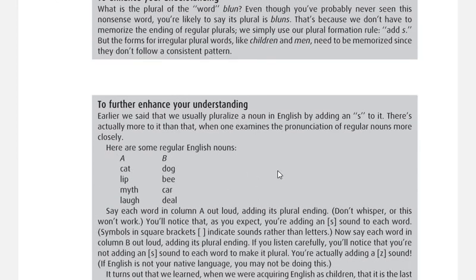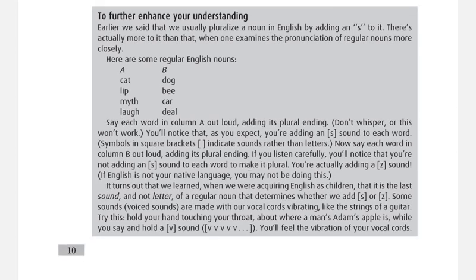Please repeat after me: 'cat/cats', 'dog/dogs', 'lip/lips', 'bee/bees'. You can hear that you are uttering the 's' sound with words like 'cat' and 'lip', and the 'z' sound — like 'dogs', 'bees', 'cars', 'deals'. This is the way you have to be careful while pronouncing these plural words.